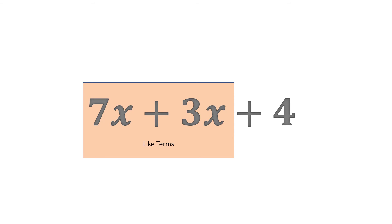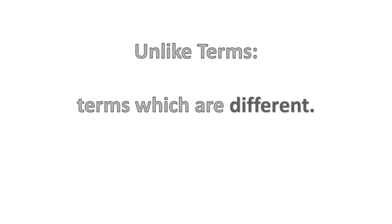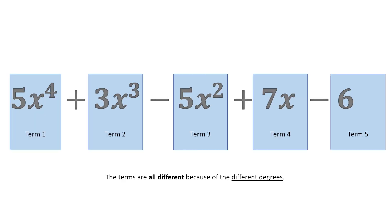An unlike term is terms which are different. This means that there is no term that has, for example, the same variable, or there is no two constants that can be added together because two constants can also be seen as like terms. In this case,